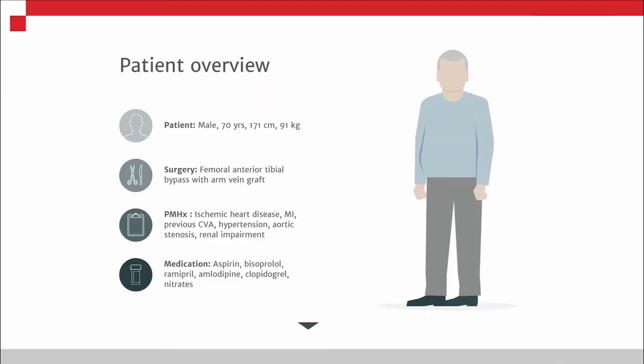Our patient being simulated today is a 70-year-old male having a fem-distal bypass with an arm vein graft for peripheral vascular disease. As with most vascular patients, he has a significant past medical history: ischemic heart disease with a reduced ejection fraction due to previous myocardial infarctions, previous strokes, hypertension, mild aortic stenosis, and renal impairment. His medications are consistent with a vascular patient such as himself.